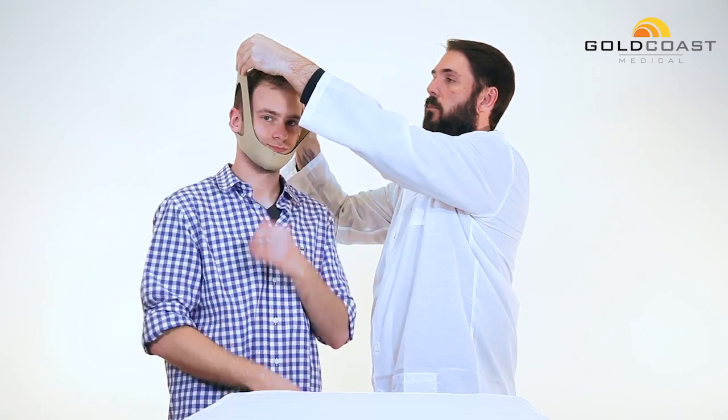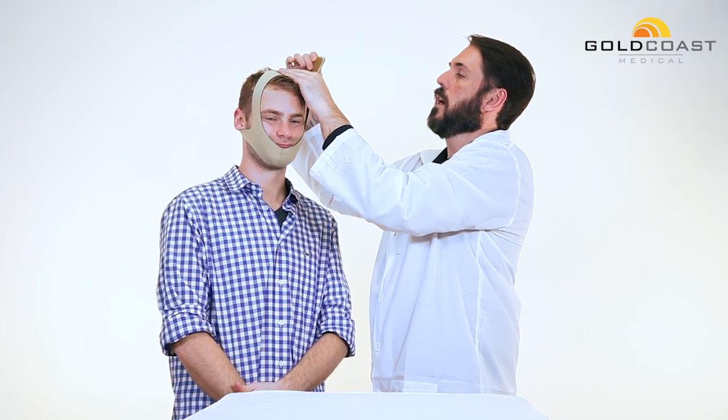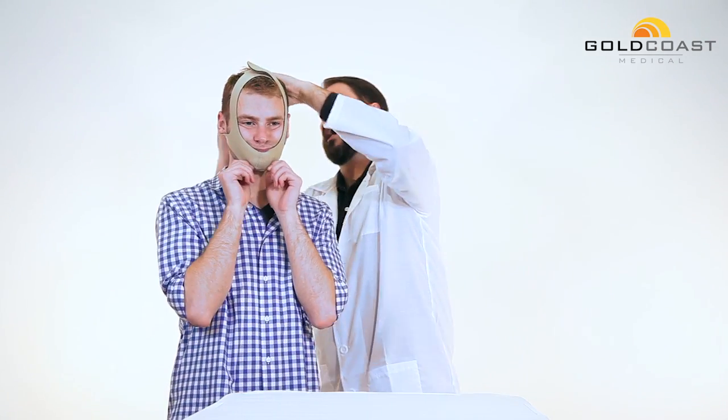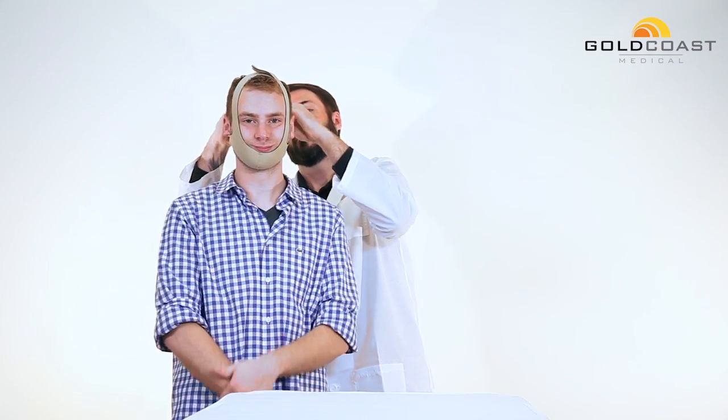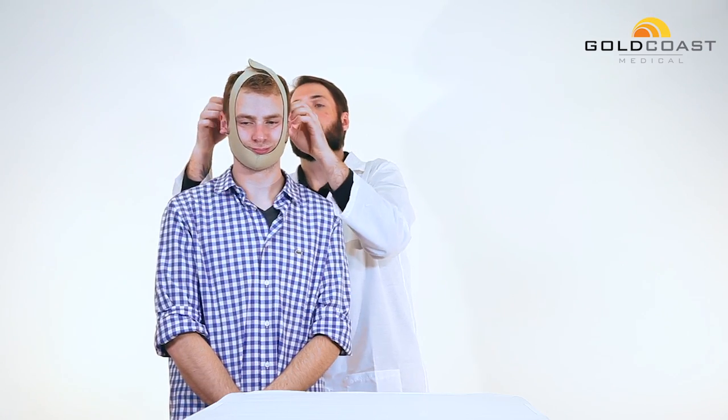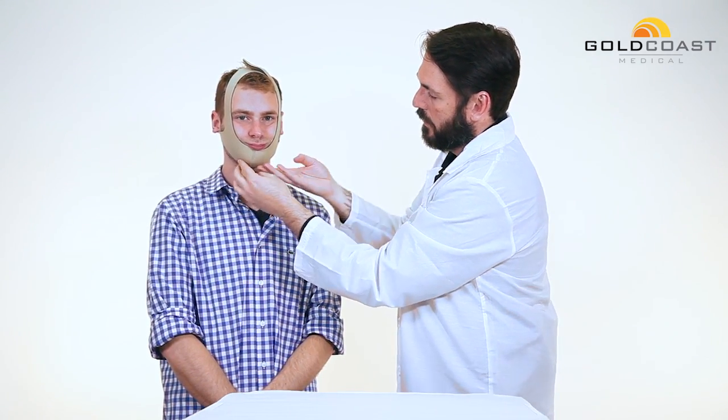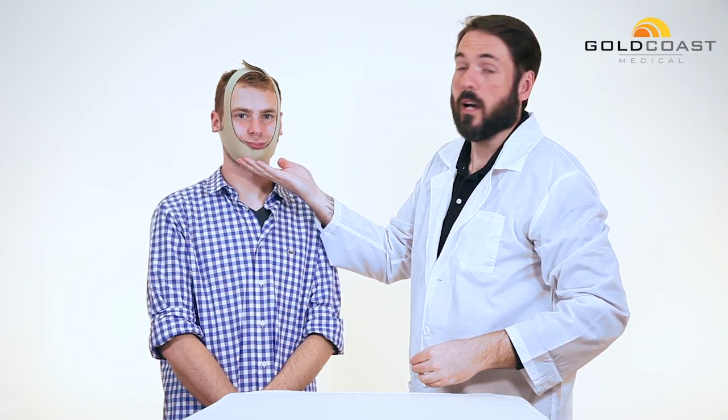Now you've got two adjustments on this chin strap: you've got one on the top of your head and you've got one in the back. You want to keep it tight enough that it's going to hold. It should really be pulling the jaw up. You can see that it's keeping his jaw from dropping down there.